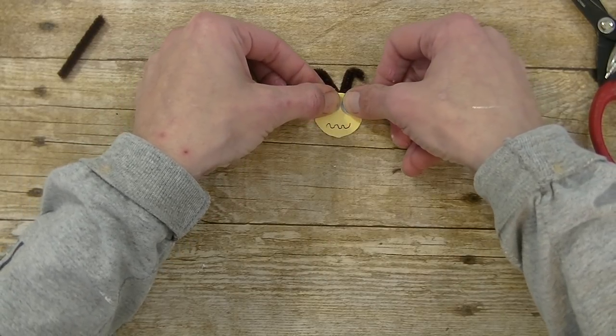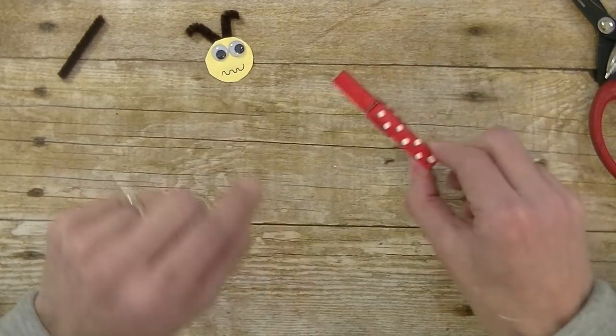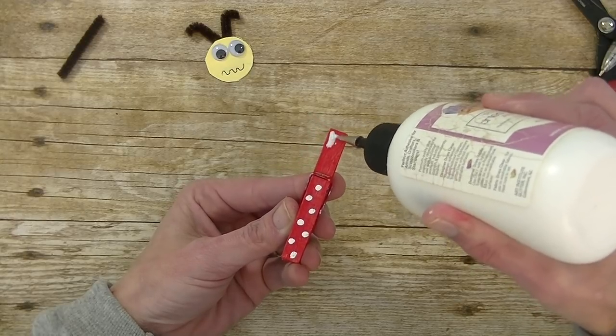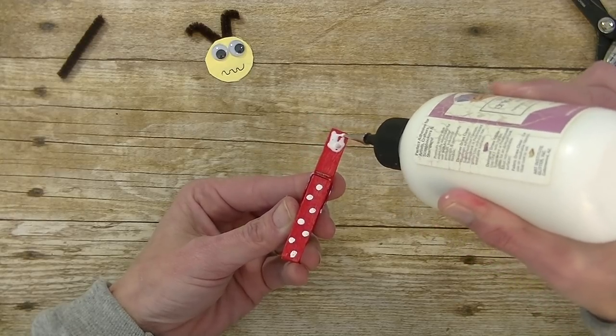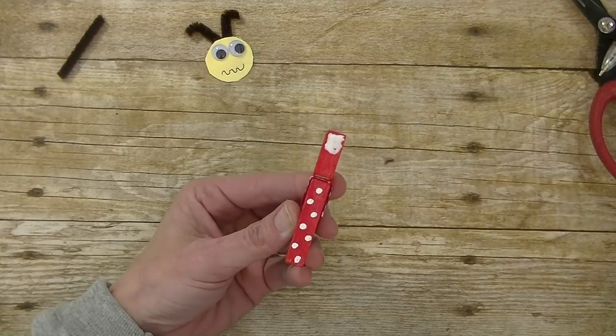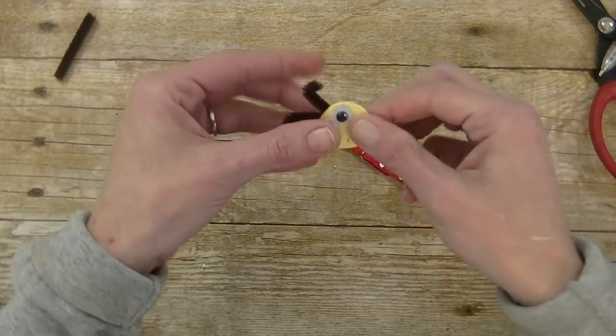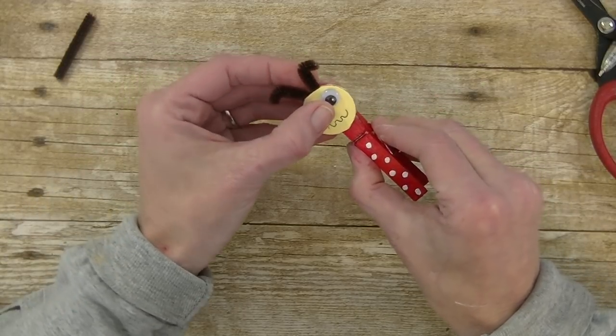Okay. All right. Give them a squish. Now we're going to come back into our clothespin. I'm going to take some glue and put a good amount here on the top. That's going to hold our head in place. If you want to you could use like a double sided tape as well. I'm going to take our face, our little head, and squish that on there.